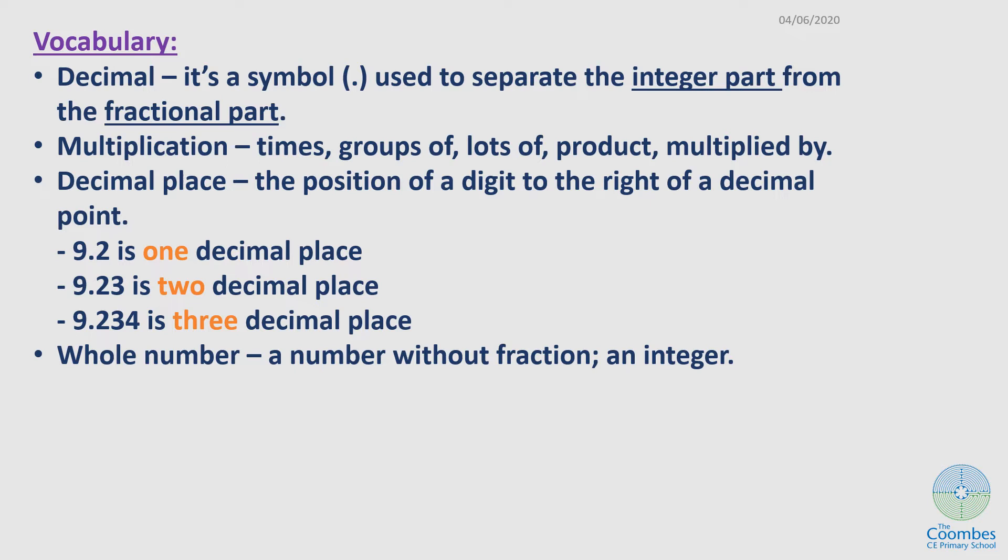A decimal place is a position of a digit to the right of a decimal point. For example, 9.2 has one decimal place, 9.23 is two decimal places, 9.234 is three decimal places.